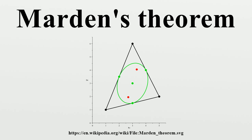In the special case that the triangle is equilateral (E equals Z3 minus 1), the inscribed ellipse degenerates to a circle, and the derivative of P has a double root at the center of the circle.